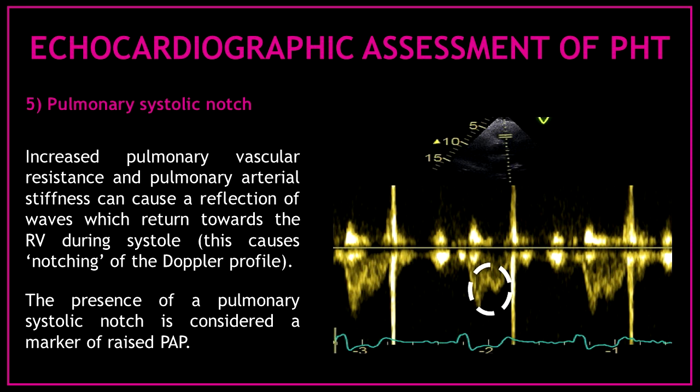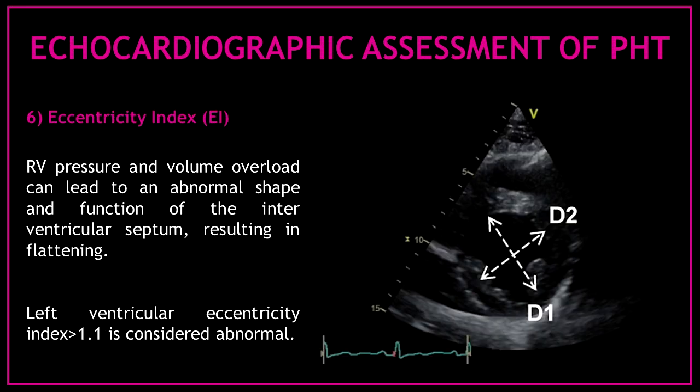Marker five is the visualization of the pulmonary systolic notch. Increased pulmonary vascular resistance and pulmonary arterial stiffness can cause a reflection wave which returns towards the right ventricle during systole, causing notching of the Doppler profile. The presence of a pulmonary systolic notch is considered a marker of raised pulmonary artery pressure. Marker six is the eccentricity index; right ventricular pressure and volume overload can lead to abnormal shape and function of the interventricular septum resulting in flattening. A left ventricular eccentricity index more than 1.1 is considered abnormal.